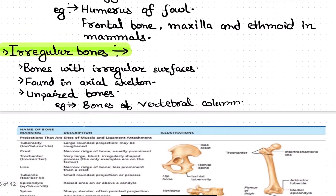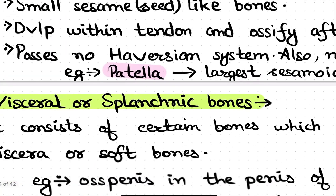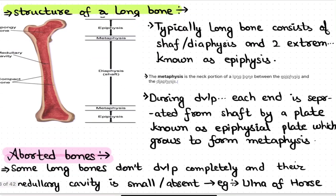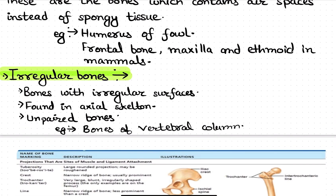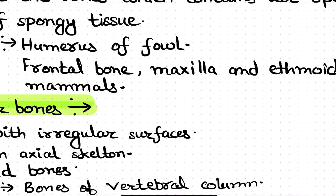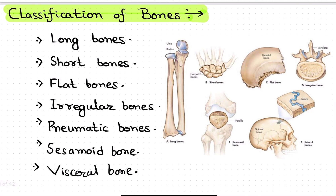Irregular bones have irregular surfaces, such as the vertebrae of the vertebral column. They are generally found in the axial skeleton and are unpaired bones. This concludes the classification of bones, which is very important for exams and concept building.